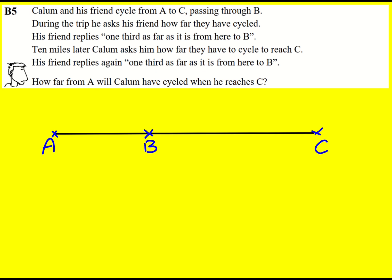So this is implying that the first time is going to be before B and the second time after B. So let's just imagine it's here for example. So this amount is going to be one-third of this amount. That's what the first sentence is saying. How far they cycled? One-third as far as it is.